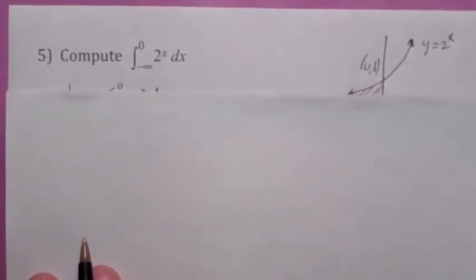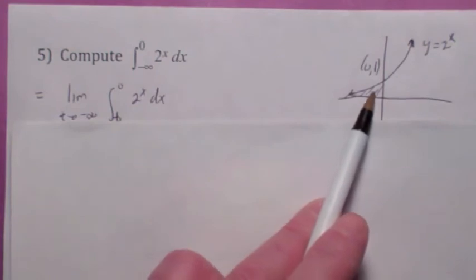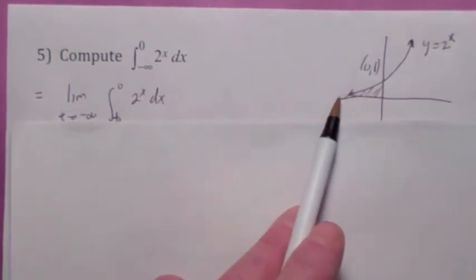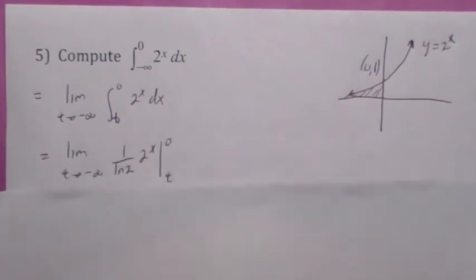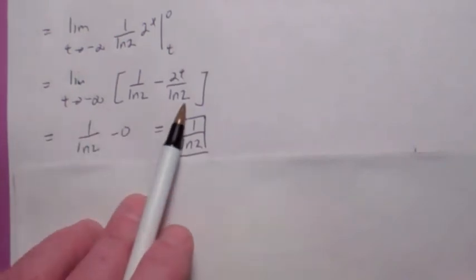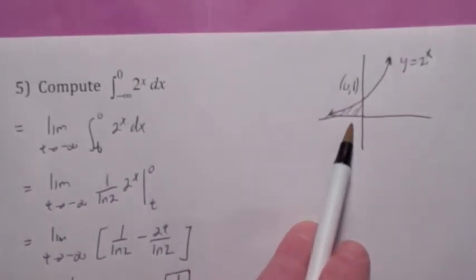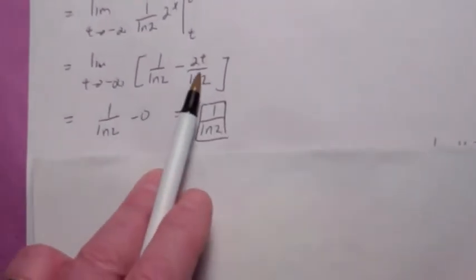The integral from negative infinity to zero of 2 to the x. Is that area from negative infinity to zero finite? It might be — definitely not obvious. When you integrate 2^x, you get one over ln(2) times 2^x. Remember, it's the limit as t goes to negative infinity. When you plug in zero, you get one over ln(2); when you plug in t, you get the term with 2^t. The limit as t goes to negative infinity of 2^t: by looking at the graph of 2^x, as x gets close to negative infinity, 2^x gets close to zero. So this term goes to zero, and your final answer is 1 over ln(2).